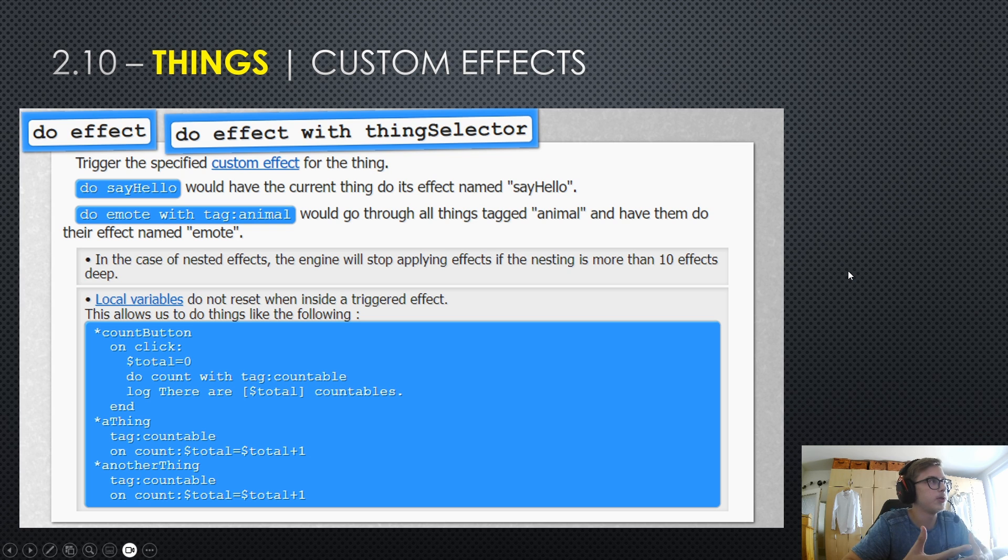Let's go a little bit more into detail as to how to actually trigger these custom effects. In your code, you basically append it like a property. This triggers the specified custom effect for the thing. For example, it says here, do say hello would have the current thing do its effect named say hello.